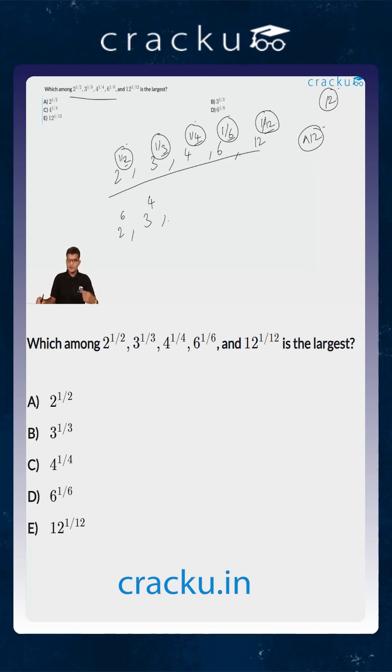4 to the power 1/4 whole to the power 12 will become equal to 4 cube. 6 to the power 1/6 whole to the power 12 will become equal to 6 square. And 12 to the power 1/12 whole to the power 12 will be 12.